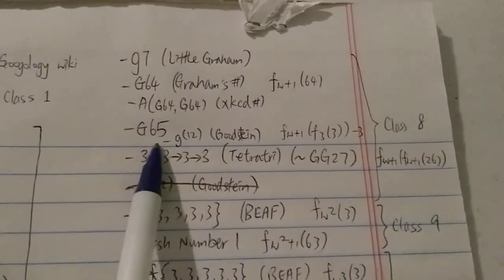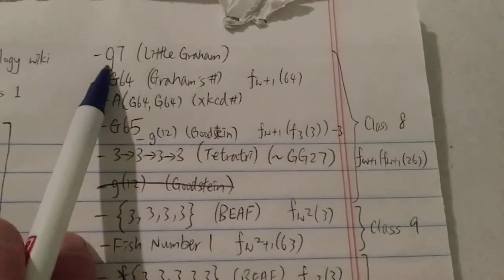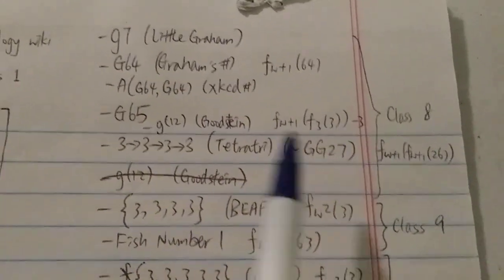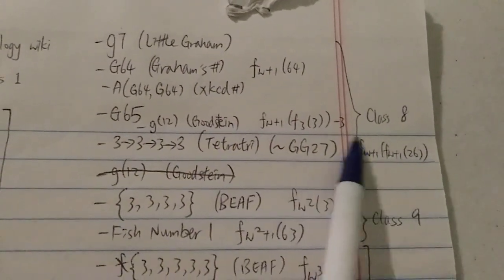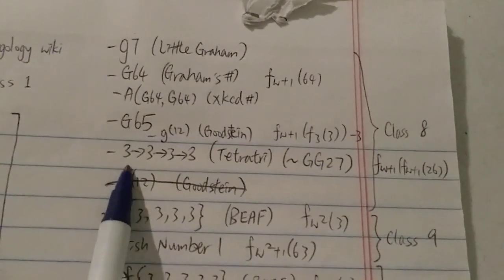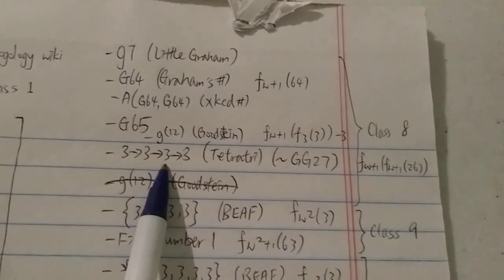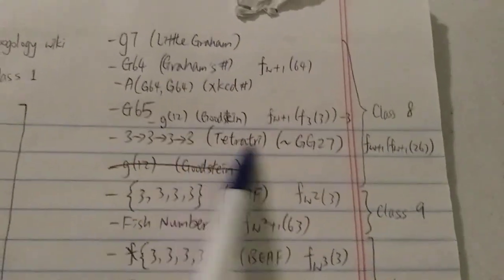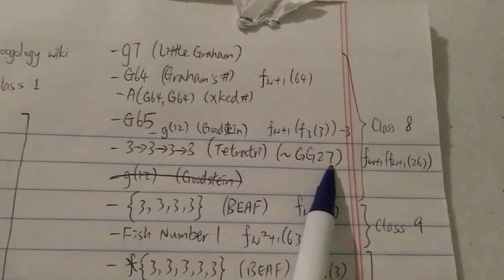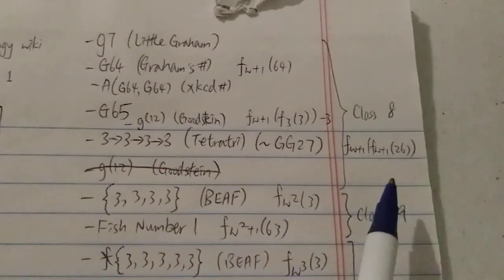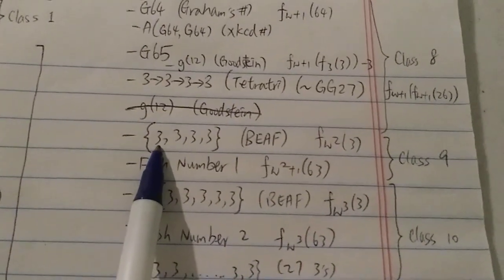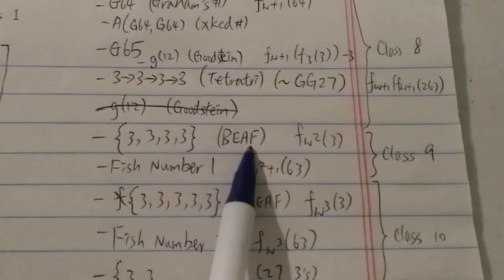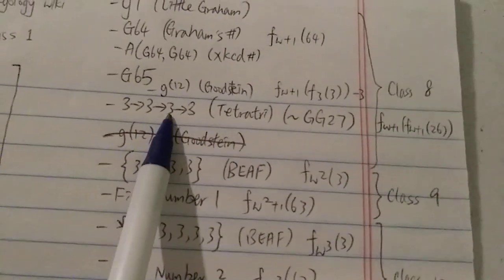So g65, and then we have a small-g Goodstein sequence number — not the same as Graham's g — based on the Goodstein sequence, a fast-growing function that grows much faster than the G-sequence. g12 in that notation is much bigger than g64. Next we have 3 right-arrow 3 right-arrow 3 right-arrow 3 in Conway chain arrow notation, which is approximately g of g27 — much bigger than g65. Beyond that we start using the BEAF function, another very fast-growing function that grows much faster than even chain arrow notation. This is class 9.